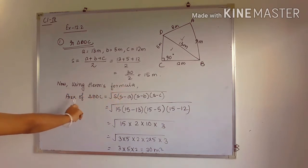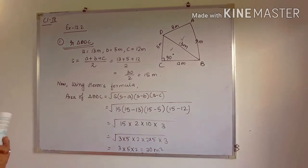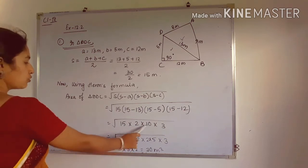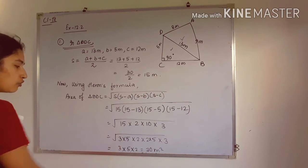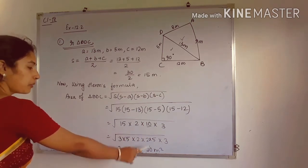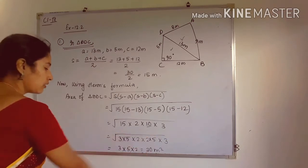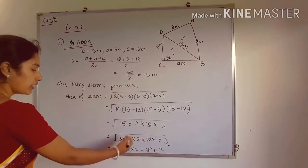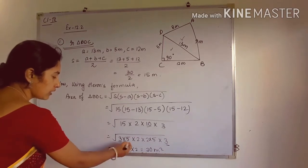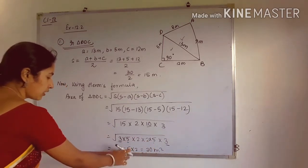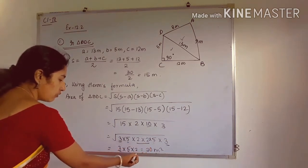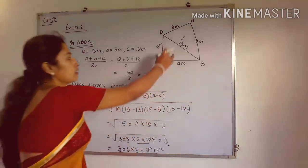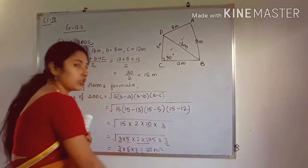Using Heron's formula, the area of triangle BDC = √(S × (S−A) × (S−B) × (S−C)). After substituting values, this becomes √(15 × 2 × 10 × 3). Doing the prime factorization: 15 = 3×5, 10 = 2×5, and 3 = 3. Pairing factors and taking them outside the root, we get 3 × 5 × 2 = 30 meter square.